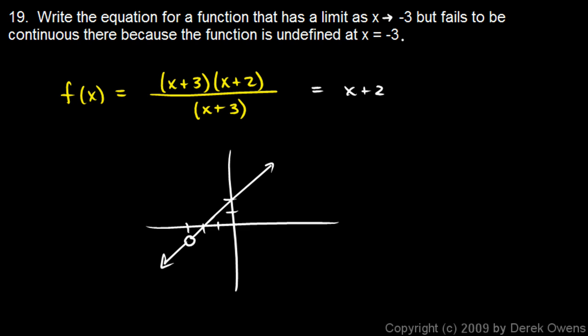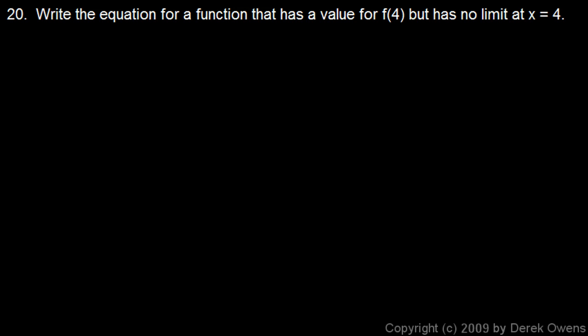This is one where the function has a limit as x approaches negative 3. As we come at negative 3 from one side or the other, we're getting closer and closer to a particular y value. But the function is undefined at that point because there's a hole in the graph.